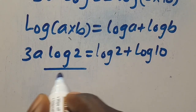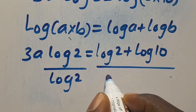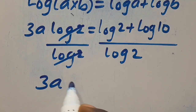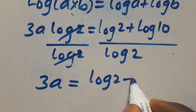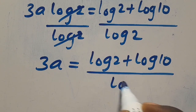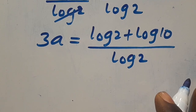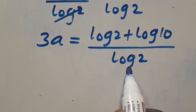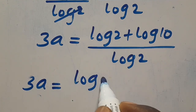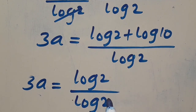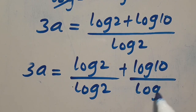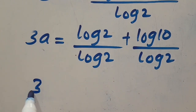So by dividing both sides by log 2, log 2 on the left cancels, and we have 3A equals log 2 plus log 10, all divided by log 2. Let us distribute this log 2 at the denominator for each numerator, so we have 3A equals log 2 divided by log 2, plus log 10 divided by log 2.